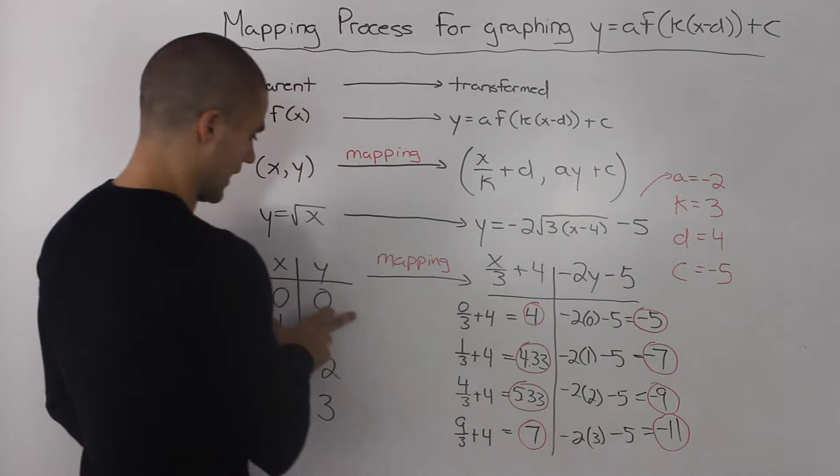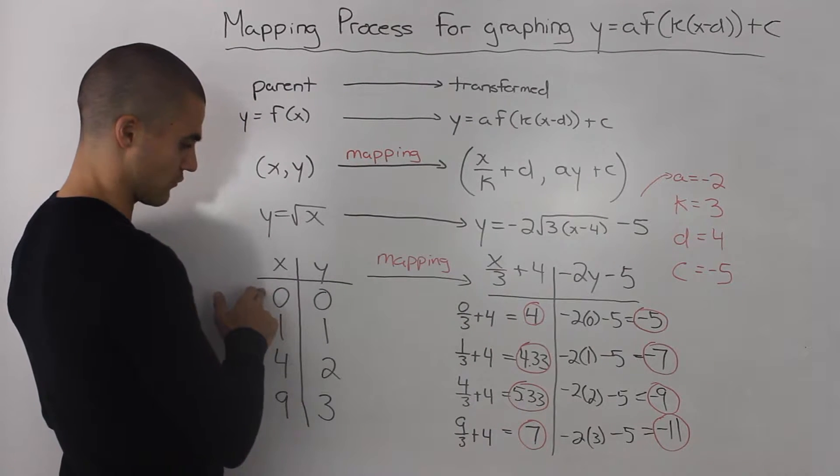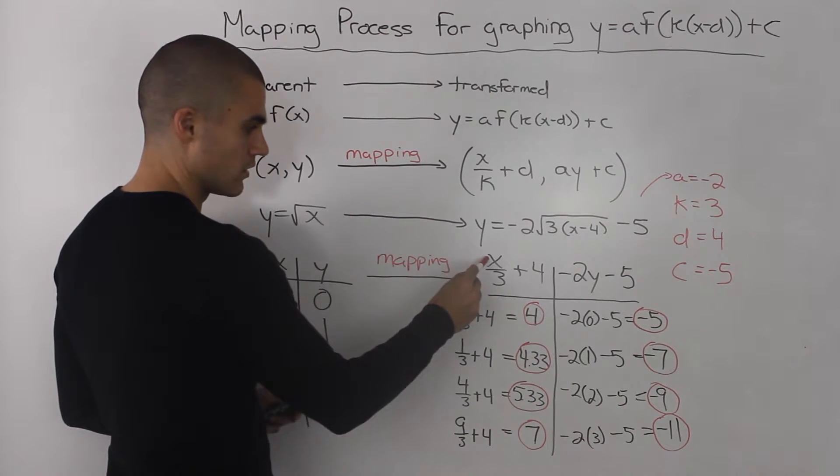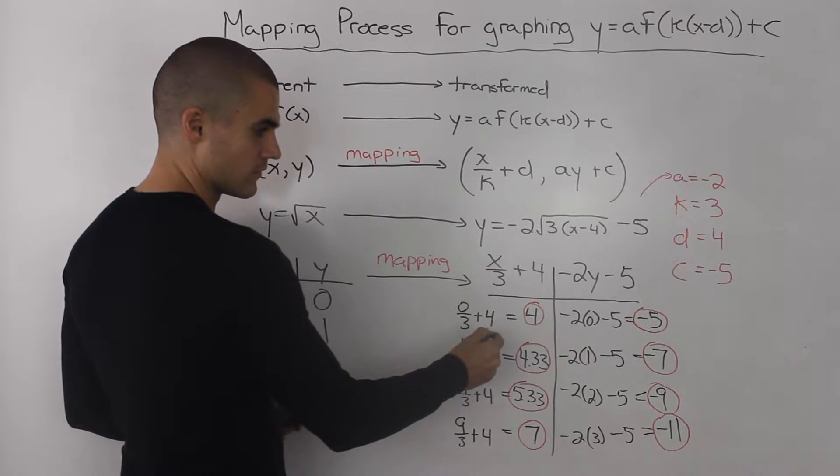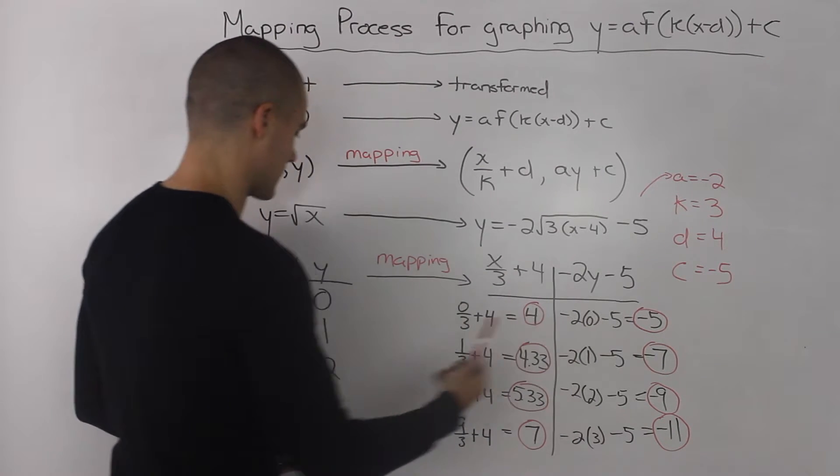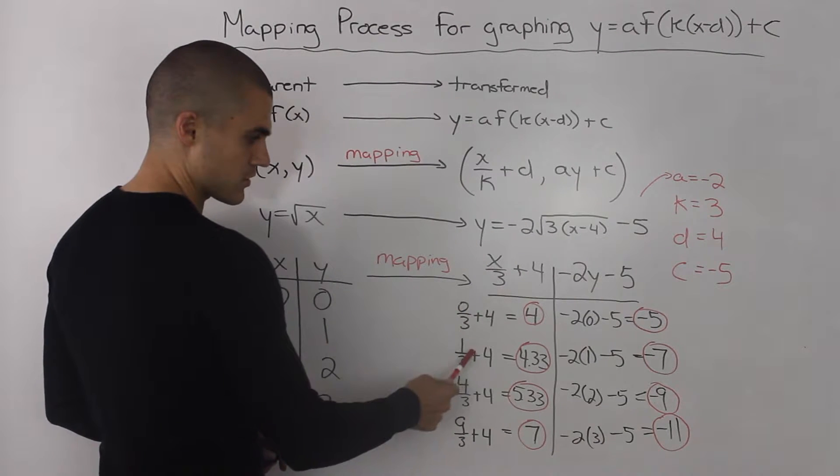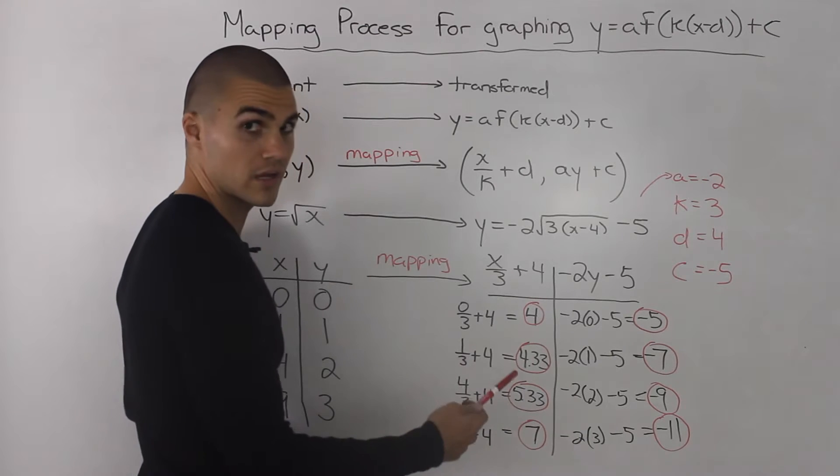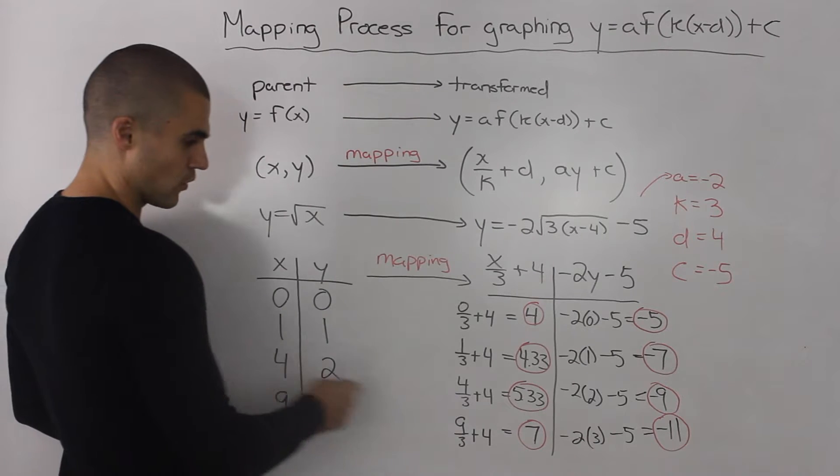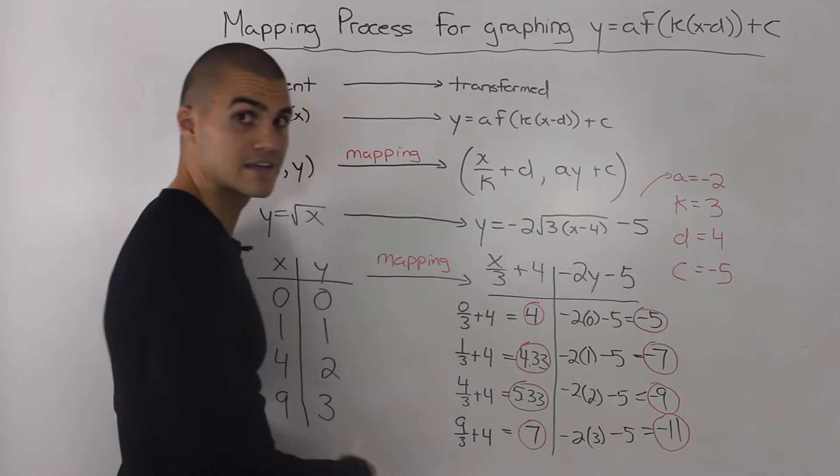Now we're taking every coordinate and putting it through the formula. For example, let's start off with this first x value of 0 in the parent function. We're going to take 0, divide it by 3, and then add 4, and we get an x value of 4 for the transform function. Let's take the next x value of 1—we take 1, divide it by 3, add 4, and we get 4.33. Then we take our x value of 4, divide it by 3, add 4, we get 5.33. And then same thing for 9, we end up getting 7.